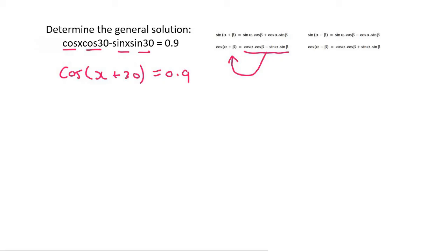So what we do now is we get our reference angle by saying shift cos of 0.9 and what we'll find is that the reference angle will be 25.84 degrees.